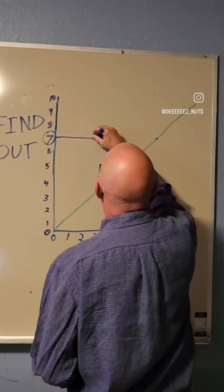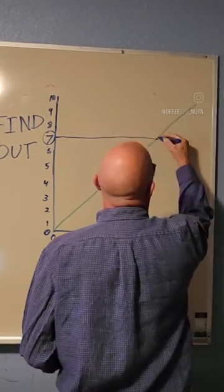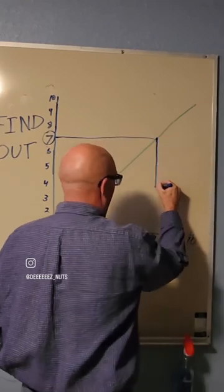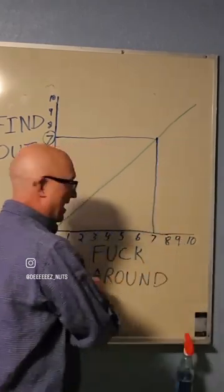and I come horizontally to my gradient line. Where it intersects with my gradient line, I'm going to come straight down to where it intersects with my fuck around line.